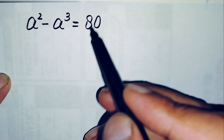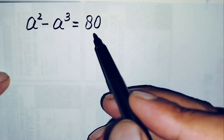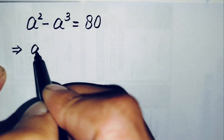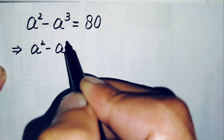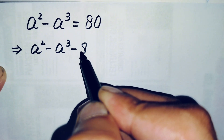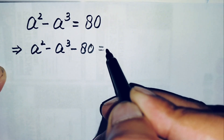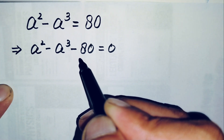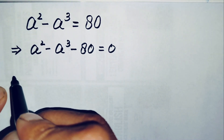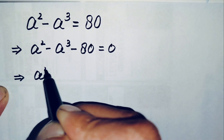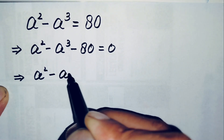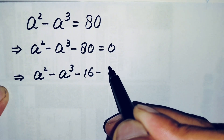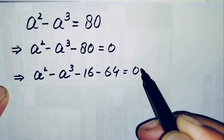First of all, we will move the number on the right hand side to the left hand side. So this will become negative, and this equation will become a squared minus a cubed minus 80 is equal to 0.